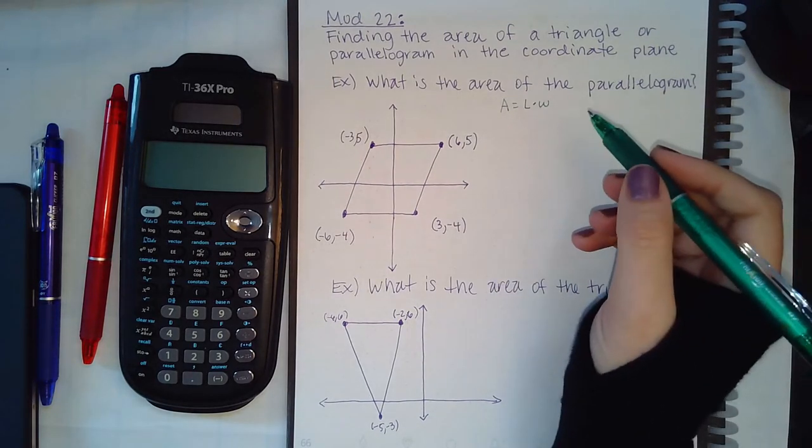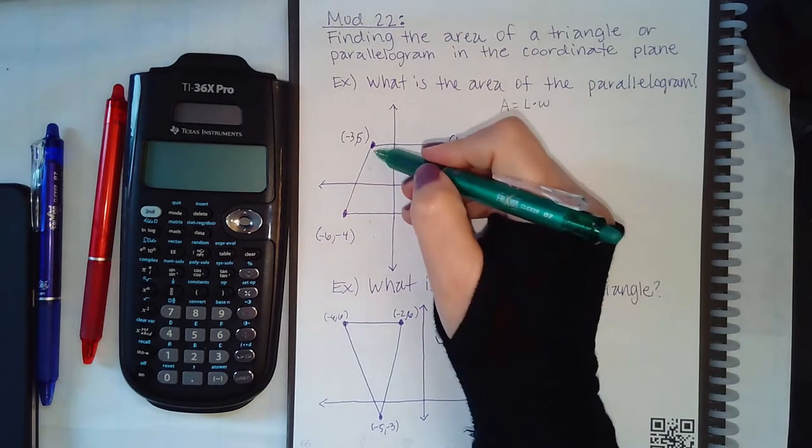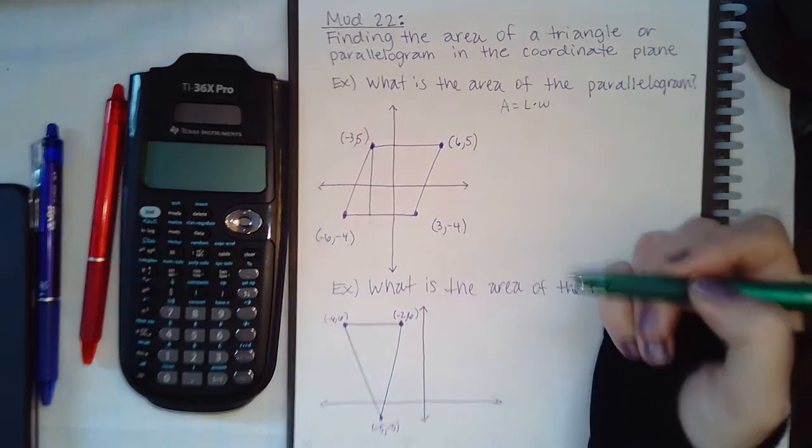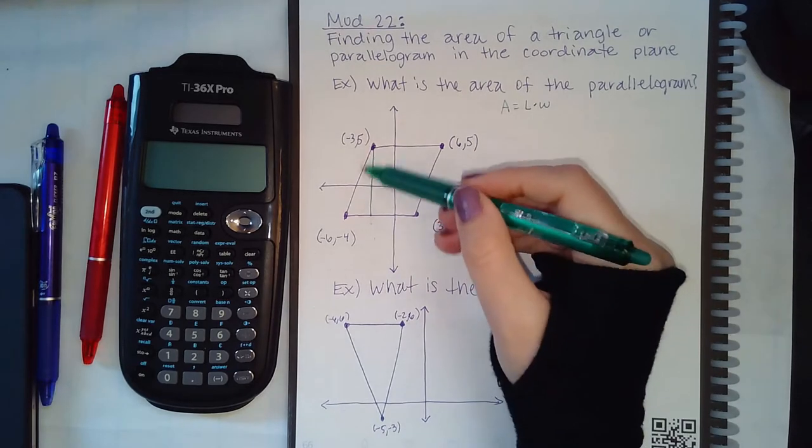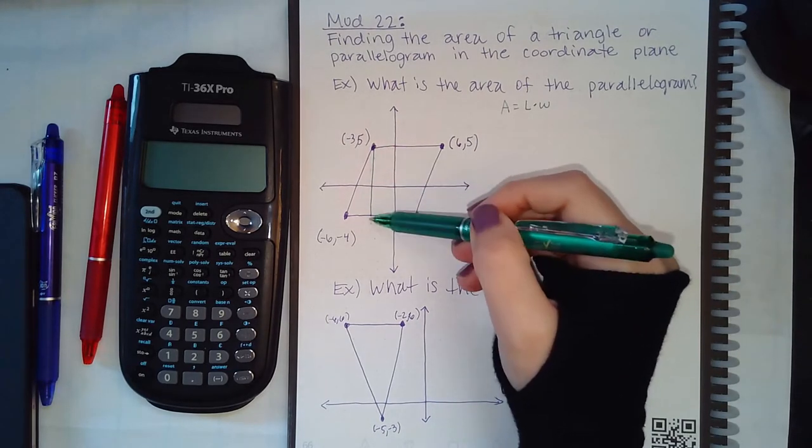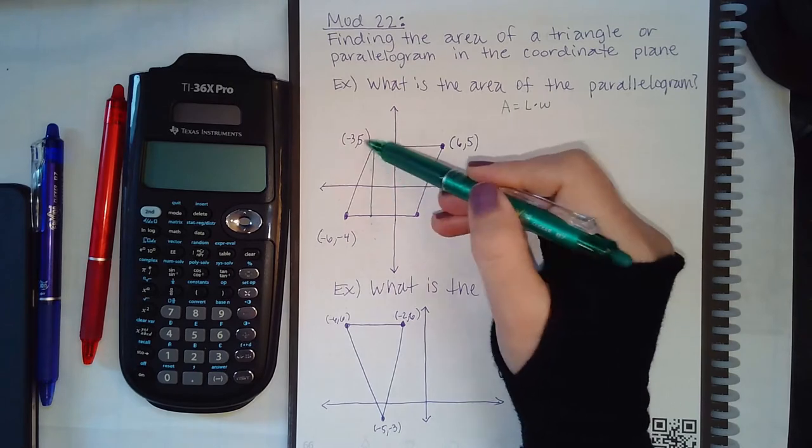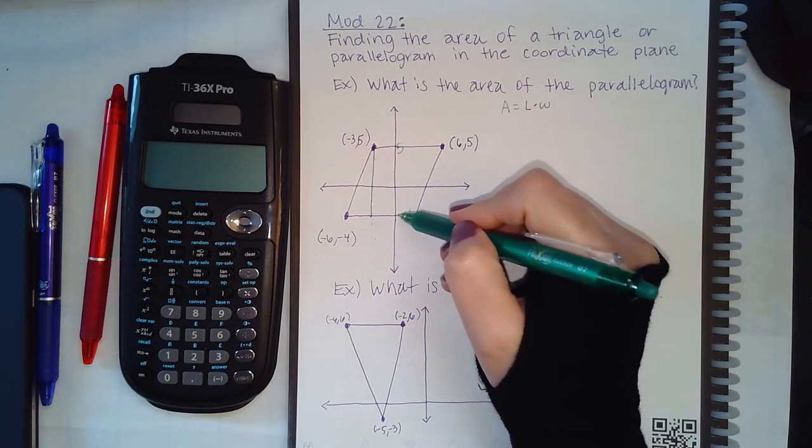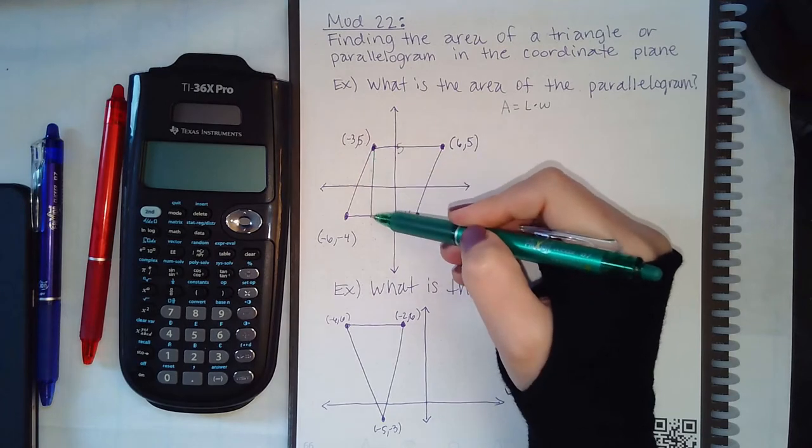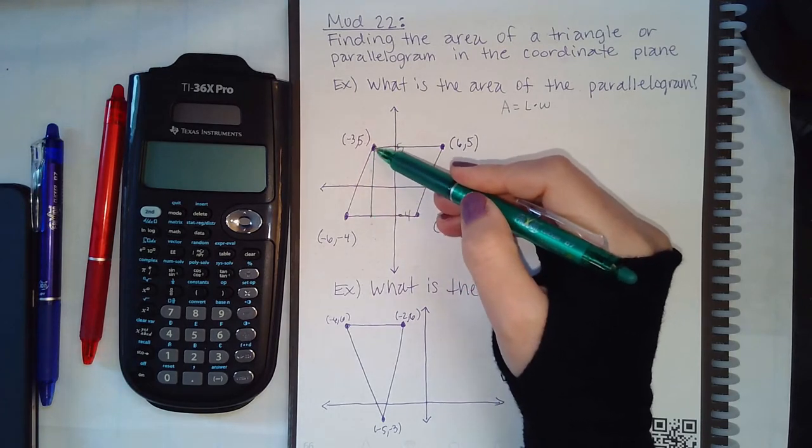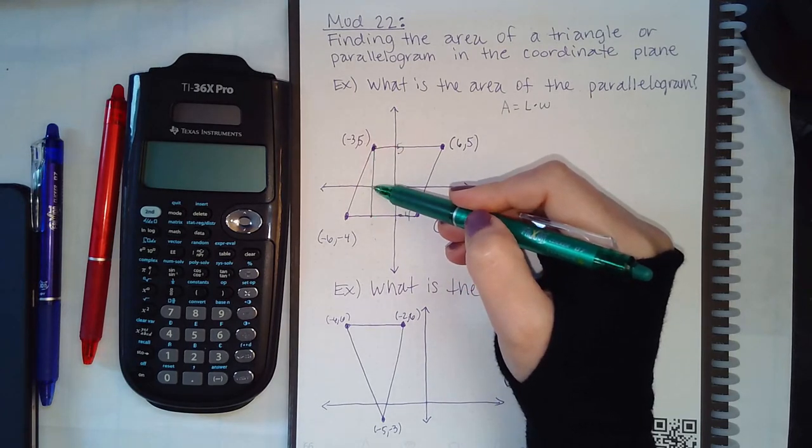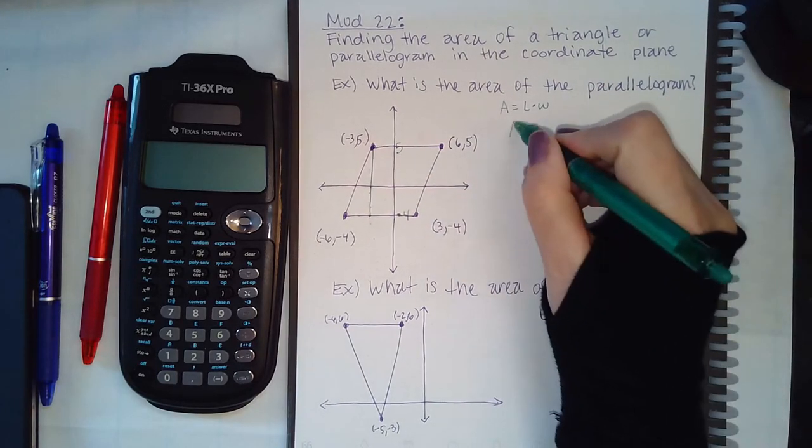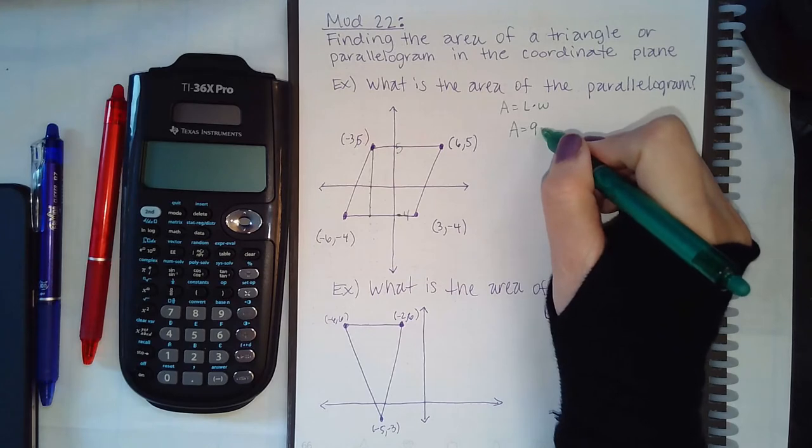What I like to do is draw a line going straight down and then count how many units to go from here to here. If this y value is 5 and this y value is negative 4, how many units would we have counted down? We would have counted 5 and then 4 more - 6, 7, 8, 9 - so 9 units for the length or width.